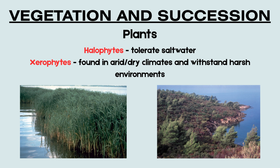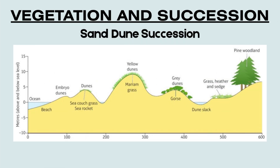The final part of this video will look at vegetation and succession. Here are two key definitions. Halophytes are plants that can tolerate saltwater, such as reeds. Xerophytes are plants found in arid or dry climates that can withstand harsh environments.